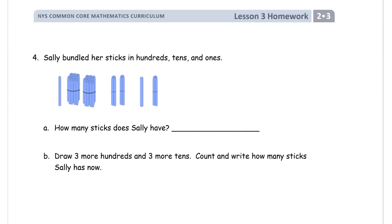Sally bundled her sticks in hundreds, tens, and ones. So these are the hundreds, these are the tens, and here are the ones. How many sticks does she have? Well, she's got 200, 10, 20, 30. Two hundreds plus 30 plus one, two ones: two hundred thirty-two sticks.